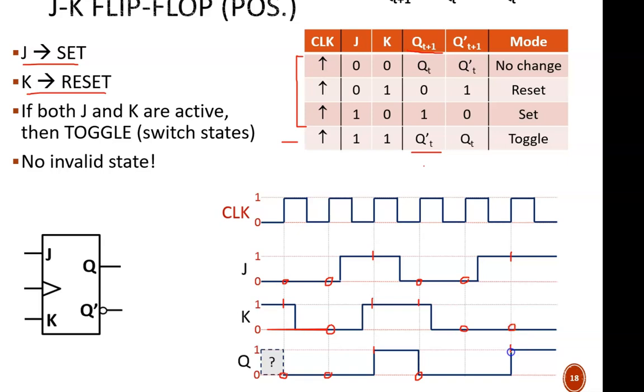Notice how I was careful to not care about the J and K values in between those vertical lines. The only times the instructions matter are at positive edges.